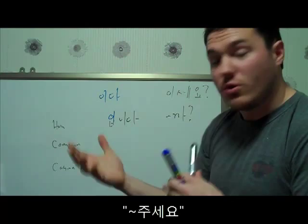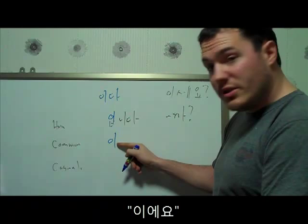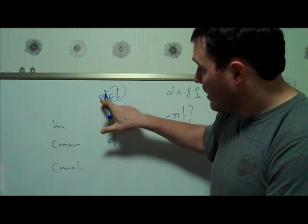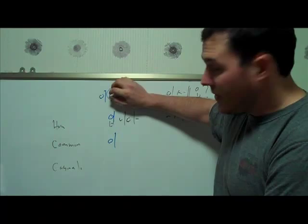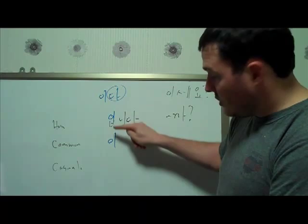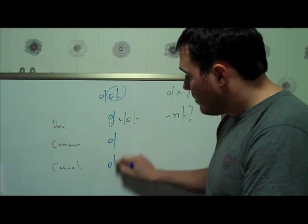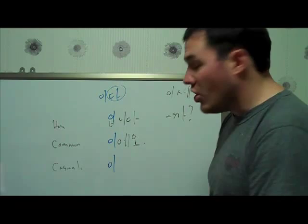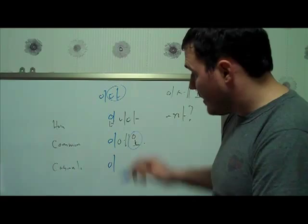Dropping down to the common form, we have the same root 이다. 다 just signifies it's a verb. When we're dealing with the verb we drop that, and then this is sort of what we work with - the part in front of the 다. You'll notice that 이 for this verb are in all of them. So in the common form it'll be 이에요.